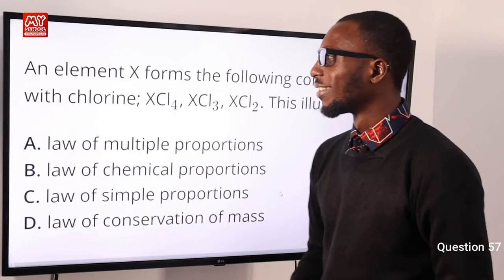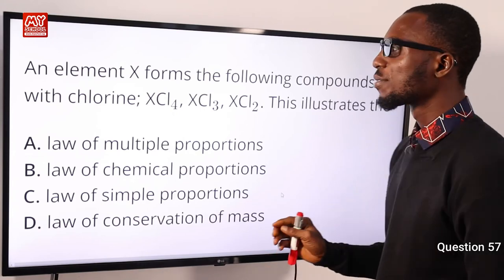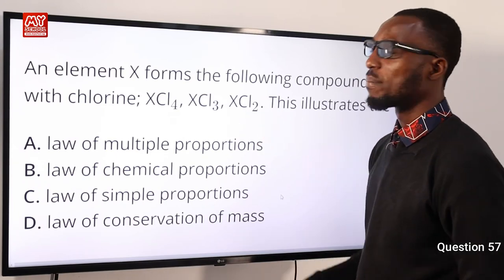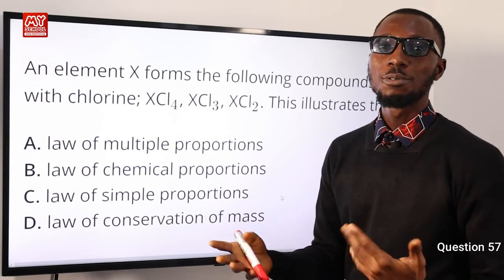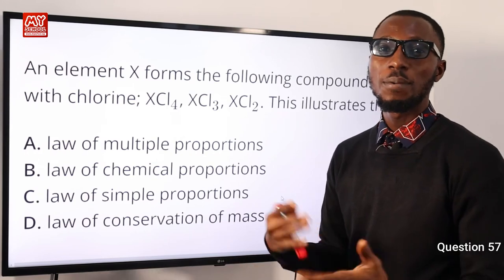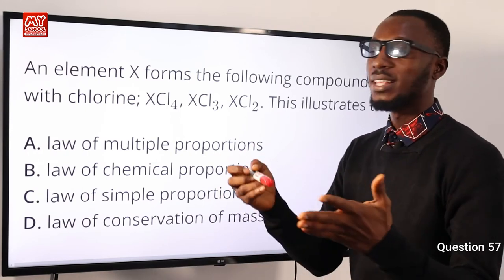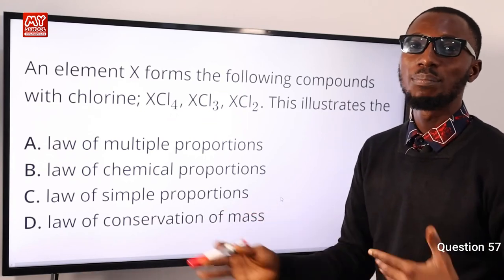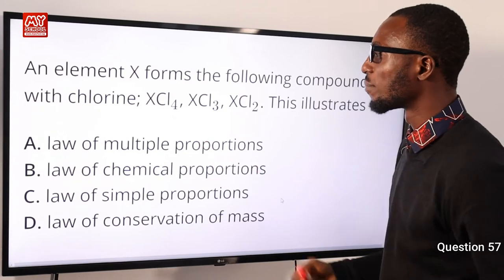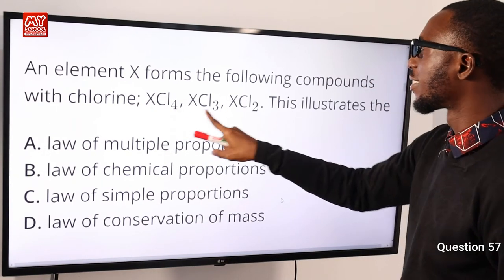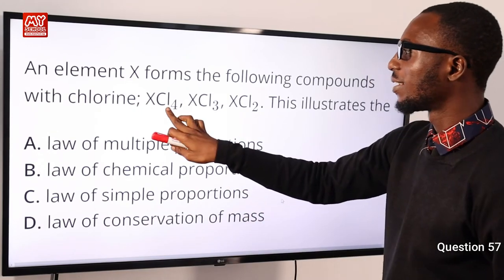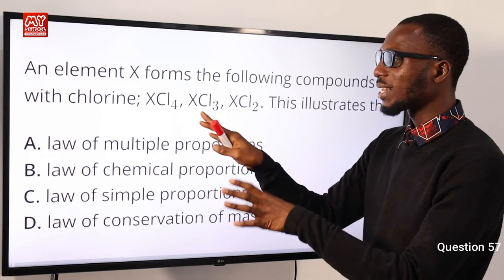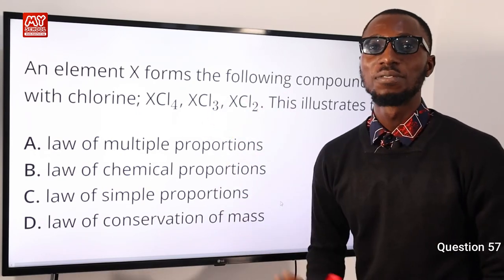Question 57: Element X forms XCl₄, XCl₃, and XCl₂ with chlorine. This illustrates the law of multiple proportions, which states that when two elements combine to form more than one compound, the various masses of one element combining with a fixed mass of the other are in simple ratios. Option A is correct.